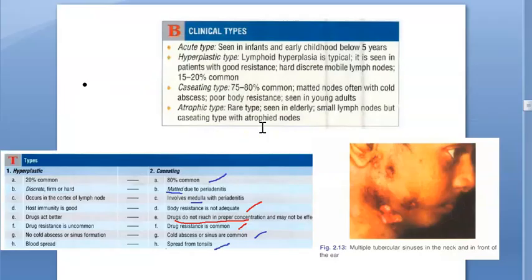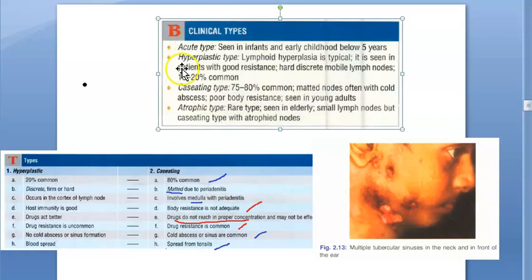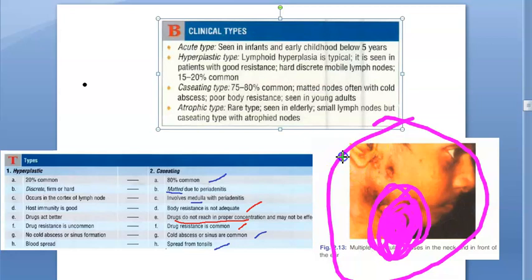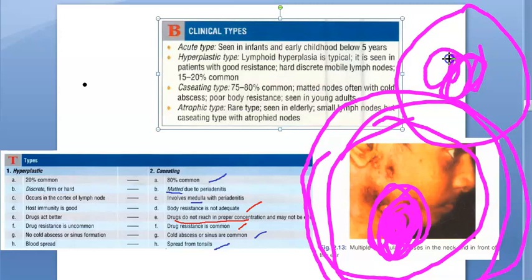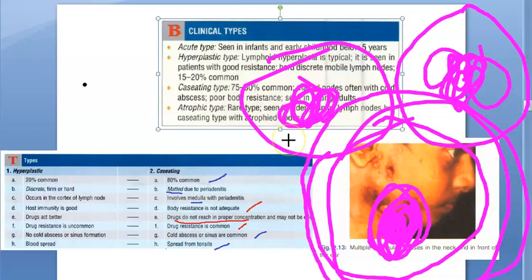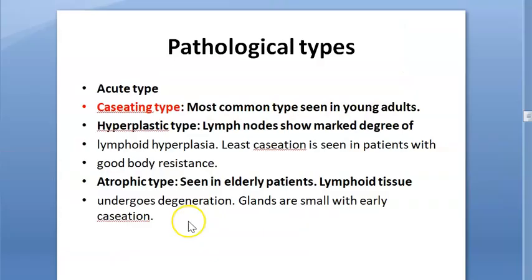Clinical types are: acute, hyperplastic, caseating (most common), and atrophic. Caseating involves the medulla with caseating material, periadenitis causing matting, and occurs because the patient's body resistance is less or there is drug-resistant TB or drugs are not reaching in proper concentration. These people develop cold abscess and then sinus formation. Atrophic type happens in the elderly. These can also be called pathological types.